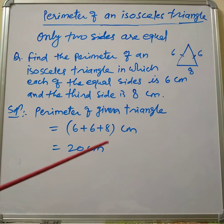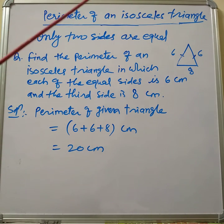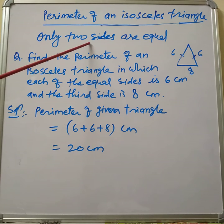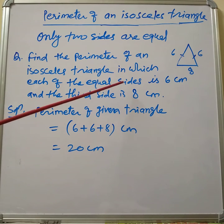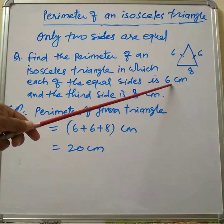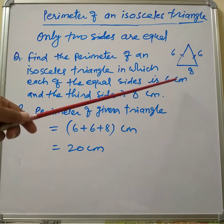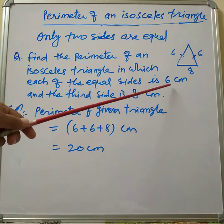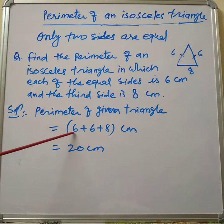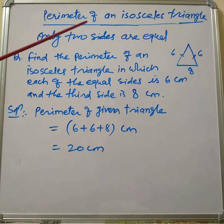In this way we can calculate the perimeter of an isosceles triangle. Keep in mind that two sides are equal. In the given question, each of the equal sides is given as six centimeters. Sometimes we do wrong here and add only six plus eight — but no. Since each equal side is given once, we must add that number two times: six plus six, then add the third side of eight centimeters.